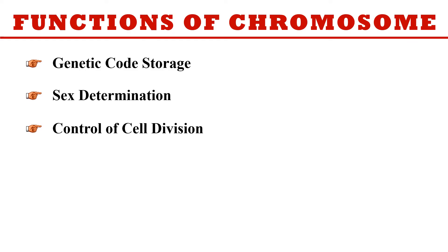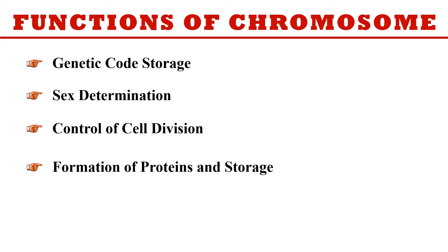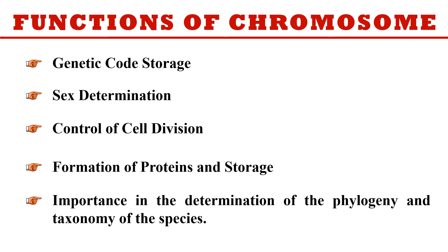Chromosomes also control cell division — during mitosis, chromosomes of the parent cell ensure the correct genetic information is passed to daughter cells, which is required for cells to grow and develop correctly. Additionally, chromosomes direct the sequences of proteins formed in the body and maintain the order of DNA; proteins are stored in the coiled structure of the chromosome. Finally, chromosomes have importance in the determination of phylogeny and taxonomy of species.